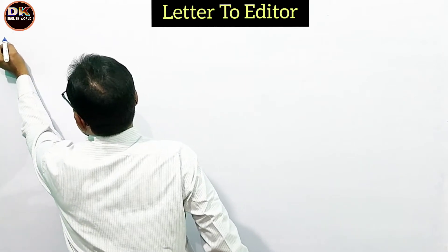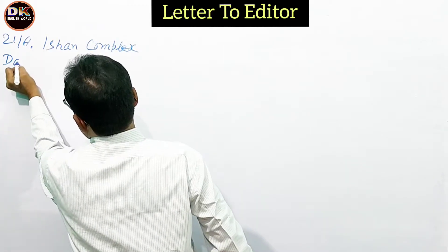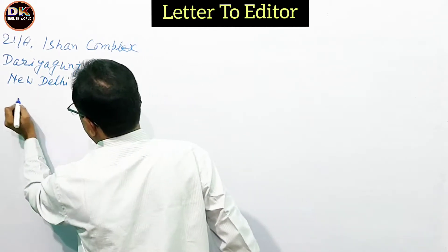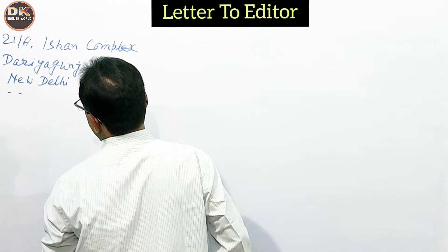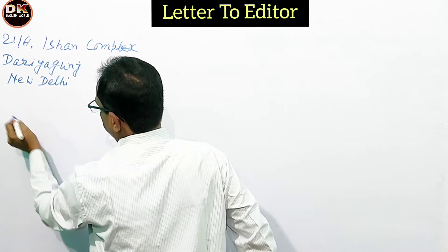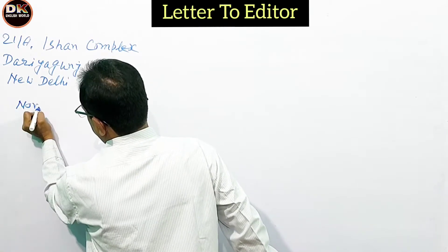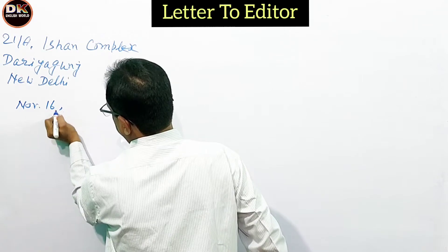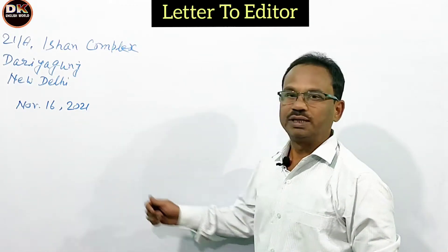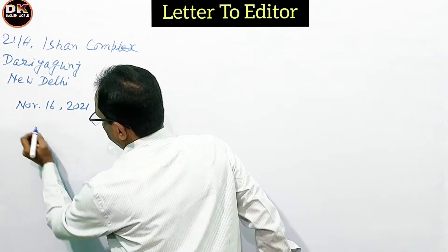Now let us write the answer. First, the sender's address: 21-A, Ishan Complex, Dariya Ganj, New Delhi. Then you put up the date — no need to write the word 'Date,' just write it as: November 16, 2021. The comma separates the day from the year. Then leave a line.